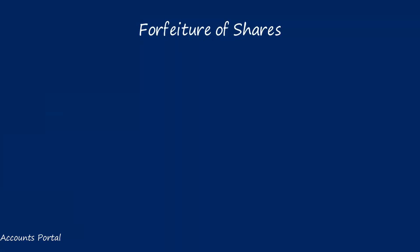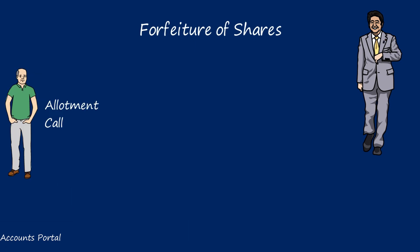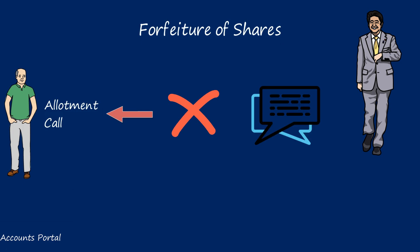If a shareholder fails to pay either allotment or call money, the company's directors have the power to cancel or forfeit the shares after giving 14 days notice. The term forfeiture means cancellation of shares — he is no longer a shareholder. The most crucial point to remember about forfeiture is that the amount paid by the shareholder will not be returned; the company will retain it and it will be treated as capital profit.